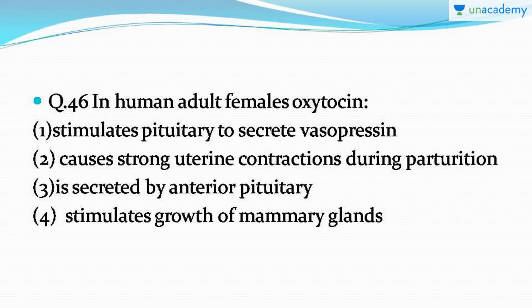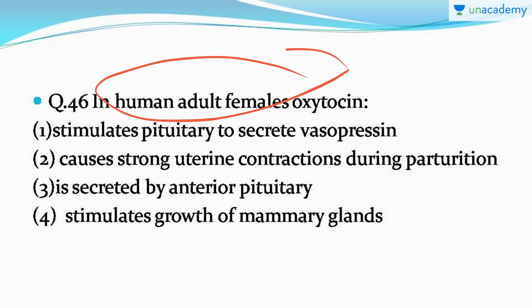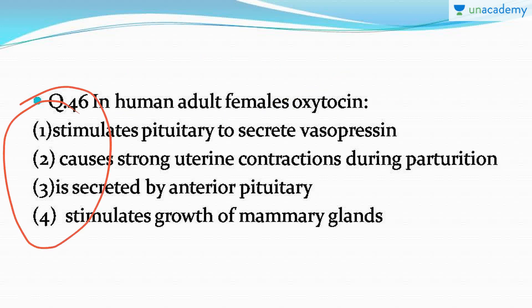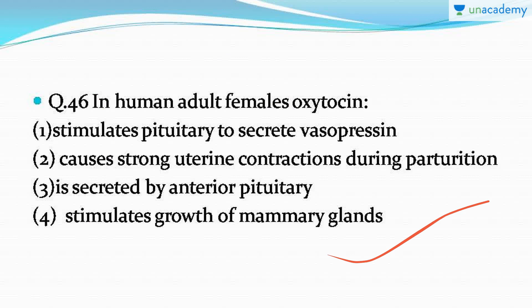Question number 46: in human adult female, what does oxytocin do? It's a very easy question straight from NCERT. The correct answer is option number two: oxytocin causes strong uterine contractions during parturition.